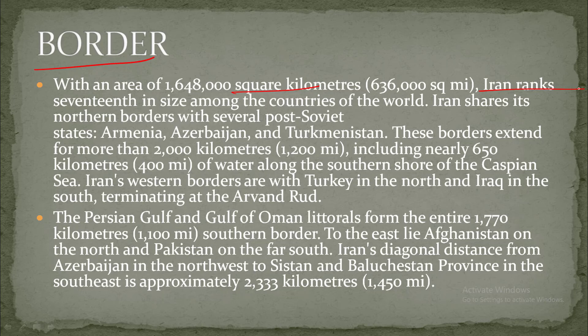Iran shares its northern borders with several post-Soviet states like Armenia, Azerbaijan, and Turkmenistan. These borders extend for more than 2,000 kilometers, including nearly 650 kilometers of water along the southern shore of the Caspian Sea.